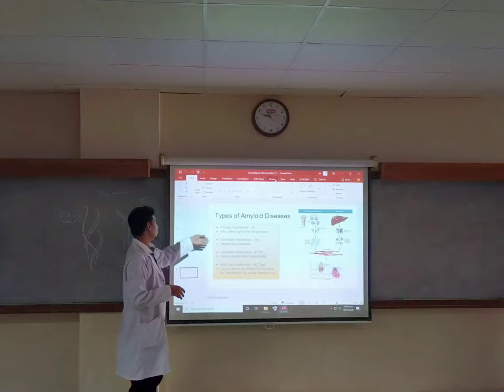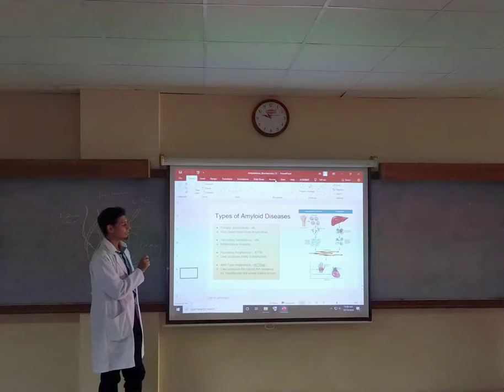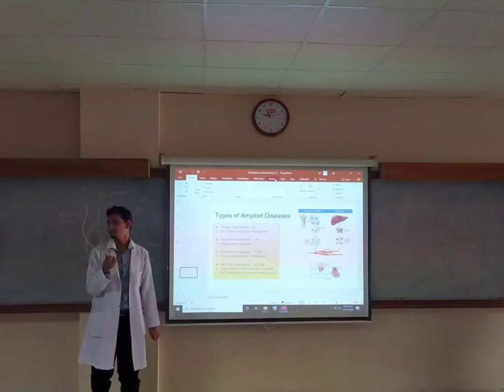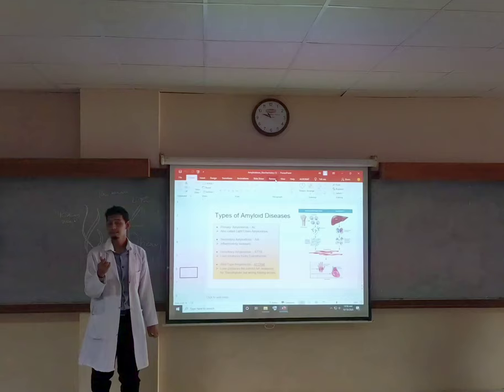In secondary amyloidosis, which is mostly seen in third world countries or developing countries, this is due to chronic inflammation. Chronic inflammation is long-term inflammation. What does inflammation mean? Swelling.